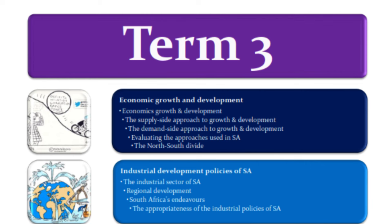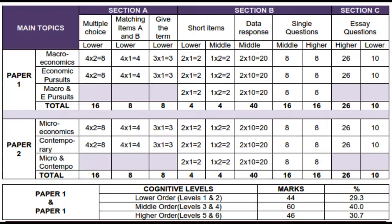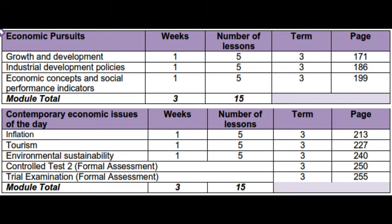The first module for term 3 is Economic Pursuits, which prepares you for paper 1 questions 1, 3, 4 and 6. Under this module we have three topics: economic growth and development, industrial development policies of South Africa, and economic and social performance indicators. This will be covered in 15 lessons.